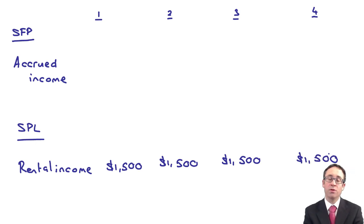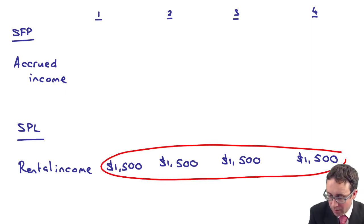For each of the four years. We've spread that total of $6,000 over the four year period.